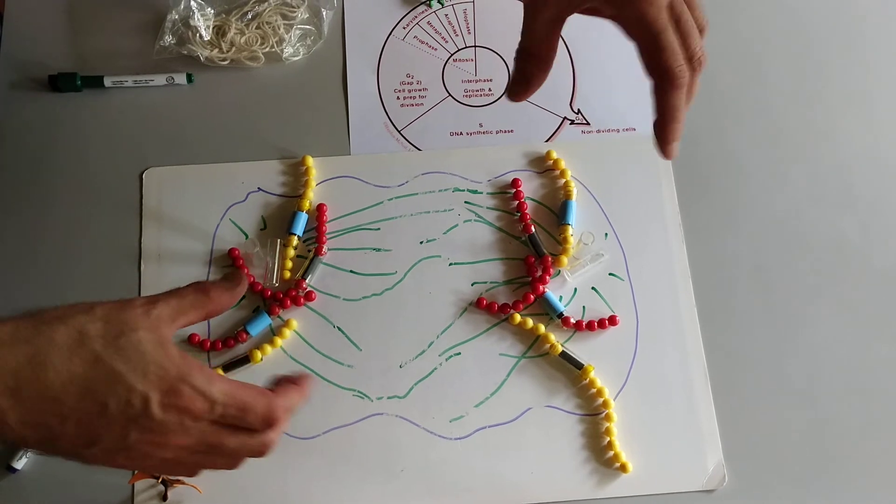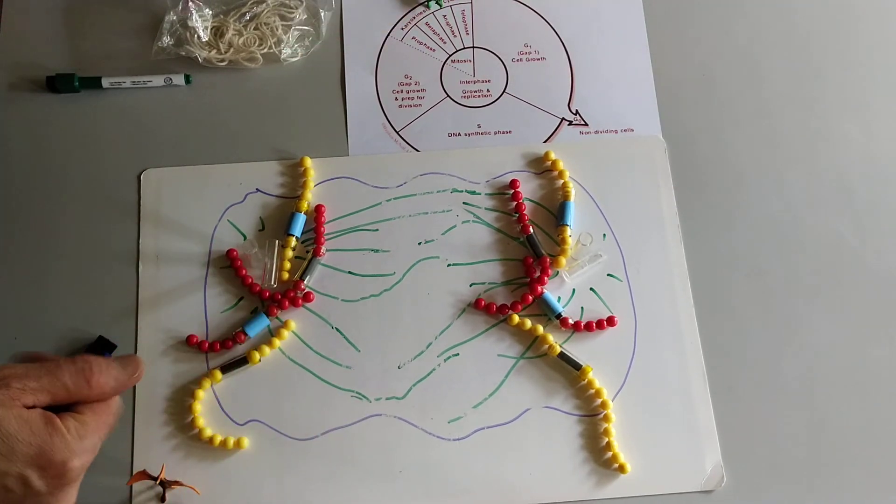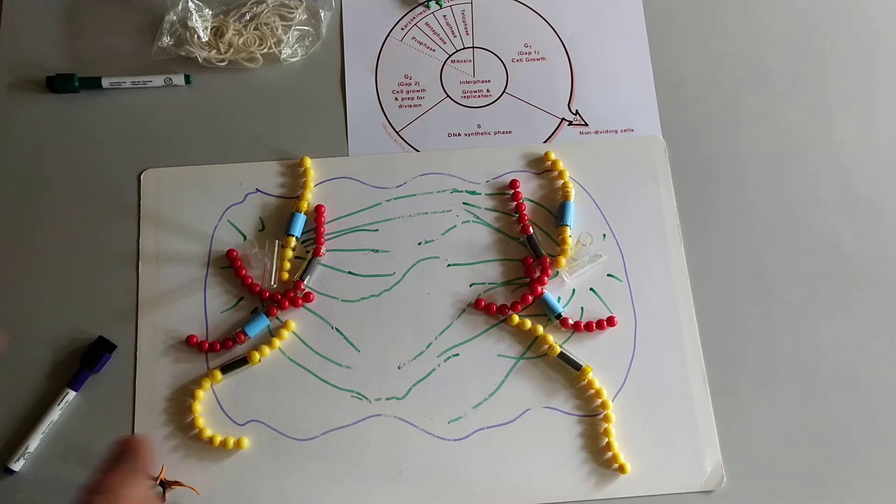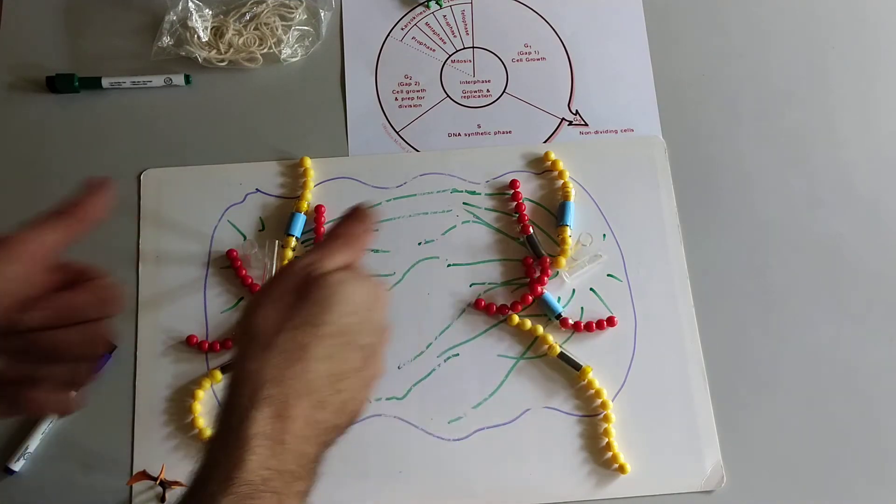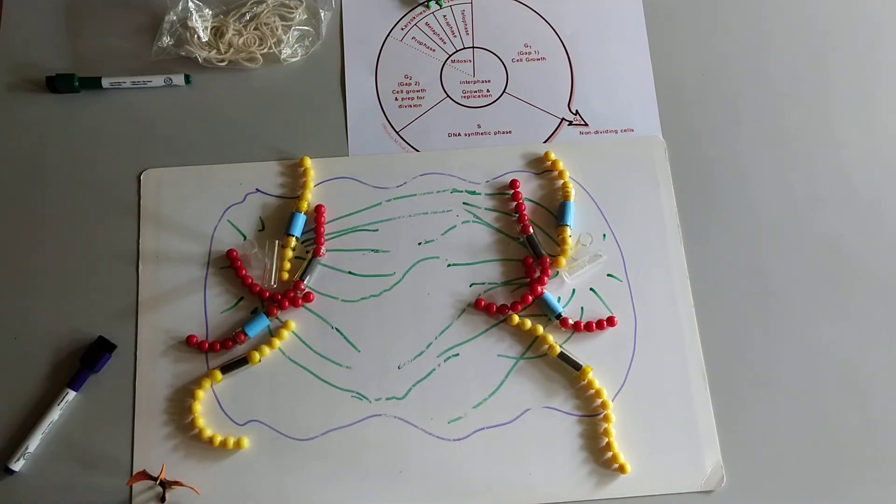The other thing that happens is the cell physically elongates. There are some non-kinetochore microtubules that push the centrosomes apart. I haven't drawn those here, but that's also happening.